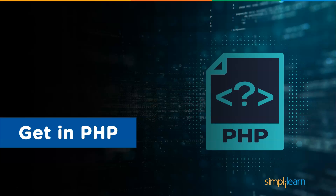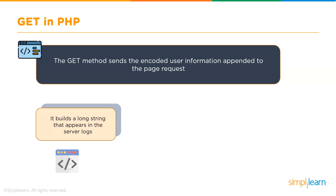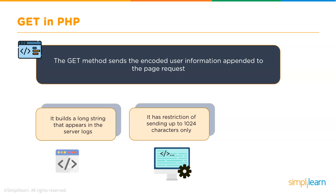Let's understand the GET method in detail first. The GET method sends the encoded user information appended to the page request. The page and the encoded information are separated by the question mark character. The GET method produces a long string that appears in your server logs and in the browser's location box.